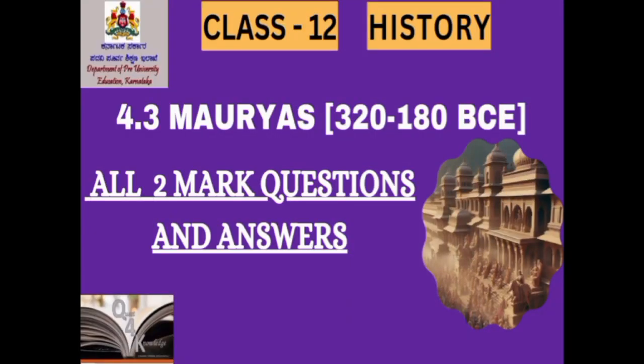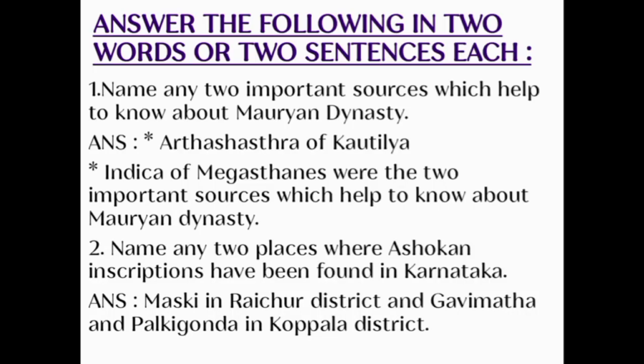Hello everyone, welcome back to our channel Quest for Knowledge. Today we are going to learn Class 12 History Chapter 4.3 Mauryas 322-180 BCE — all two marks questions and answers. Answer the following in two words or two sentences each.